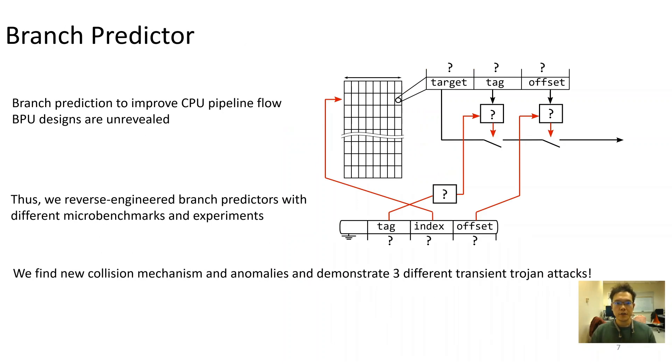Although branch prediction plays an important role to improve the performance of modern CPU, the design of CPU branch predictors are seldom revealed. So far, the uncovered information could be either basic or fragmented. In this work, we performed a reverse engineering study to discover branch prediction mechanisms for manipulating indirect branch predictions. As a result, we find new collision mechanism and anomalies that could be utilized in three different kinds of transient-execution trojan attacks.